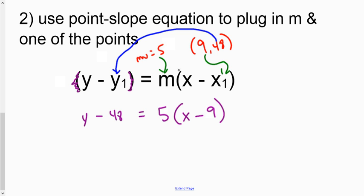So now we just have to turn it into slope-intercept form. Distribute. 5 times x is 5x. 5 times negative 9 is negative 45. It didn't do anything to the left side of the equation, so we'll just pull that down.